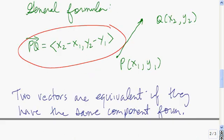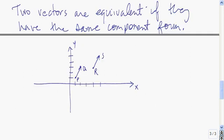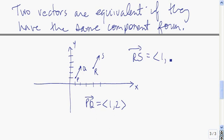The component form of a vector also allows us to tell whether two vectors are equivalent. Two vectors are the same if they have the same component form. Vector PQ has an x-component of 1 and a y-component of 2, so PQ = ⟨1, 2⟩. Similarly, vector RS also has an x-component of 1 and a y-component of 2, so RS = ⟨1, 2⟩. Therefore these two vectors are equivalent vectors.